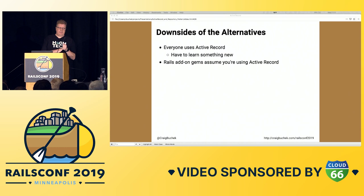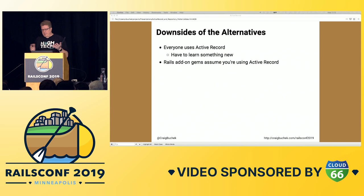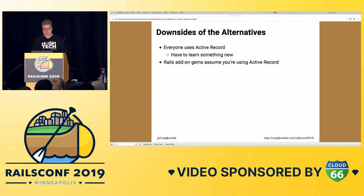I think Hanami is my favorite Ruby ORM. If I had a choice, I'd probably use it on side projects. But it's not a very realistic option — it requires everyone on your team to learn something new, and if you have a team of eight developers, probably not going to work. Also, you probably don't want to use it on a project that already has hundreds of models that's been around for eight or ten years. There's not much documentation on using it with Rails, and Rails add-ons assume you're using ActiveRecord most of the time.